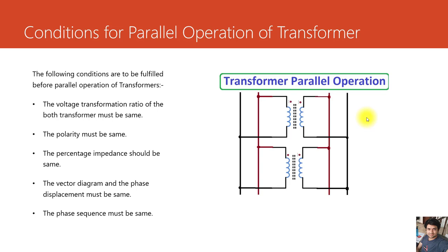What are the conditions required for the parallel operation of transformers? The conditions are: the voltage transformation ratio of both transformers must be the same, polarity must be the same, percentage impedance should be the same, vector diagram and phase displacement must be the same, and phase sequence must be the same. Among these conditions, one is the percentage impedance. We will now check how transformers behave when they have different percentage impedances.